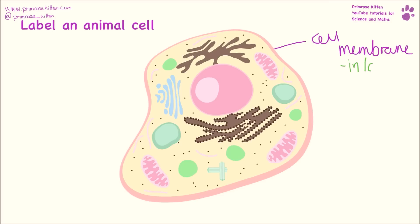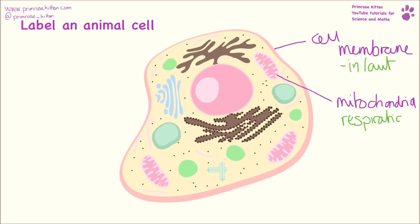The ribosomes are responsible for producing proteins. The cell membrane is responsible for what goes in and out of the cell. The mitochondria is responsible for respiration — so producing energy. All around the inside of the cell we have the cytoplasm, which is responsible for where all the reactions take place.